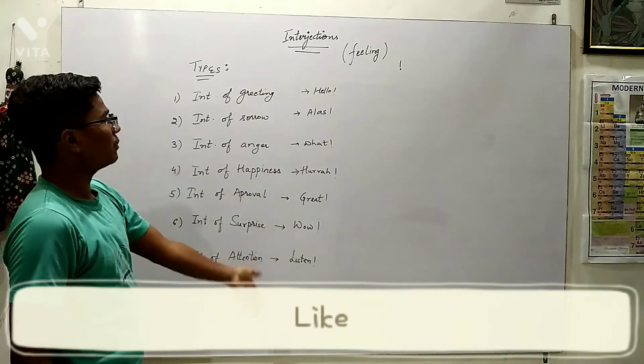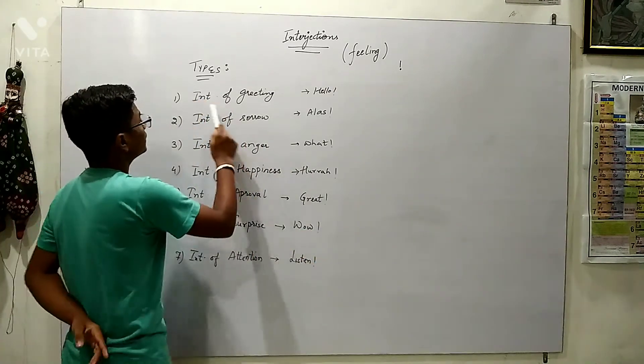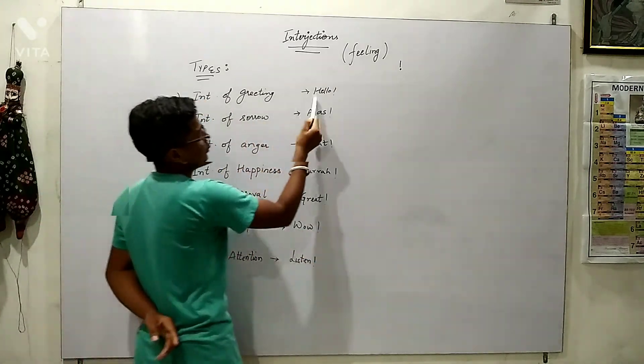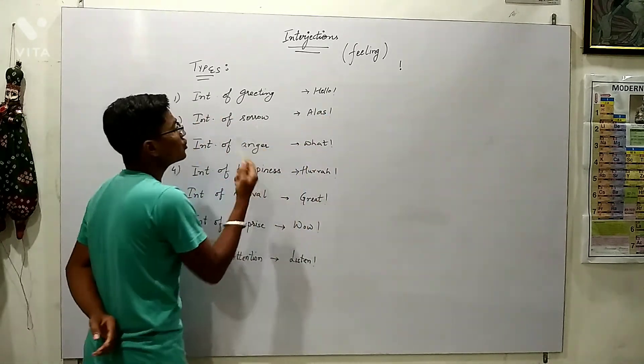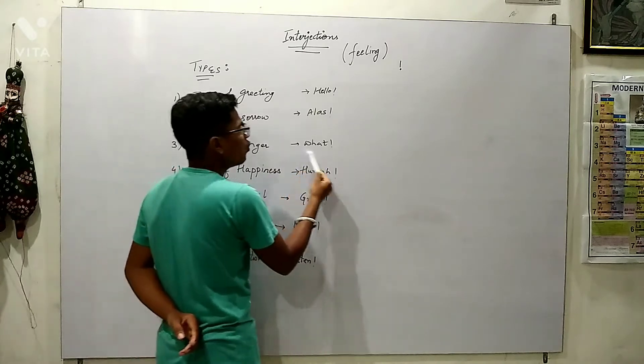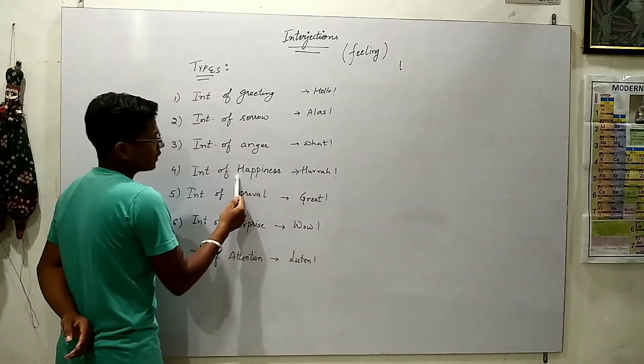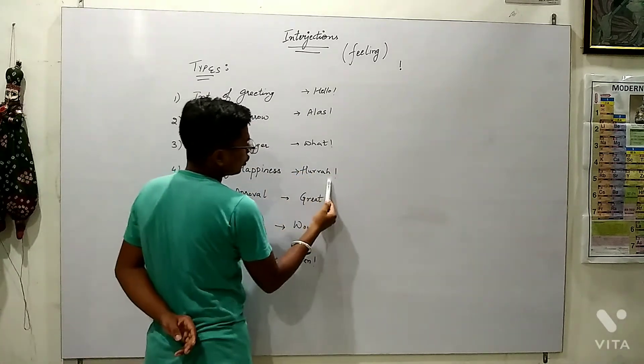So the examples are given after the type. For greeting we say hello. Sorrow, alas. Sorrow means dukhi. Anger, what? And happiness, hurray.